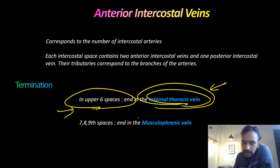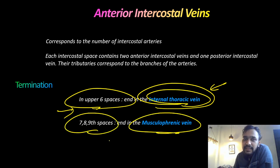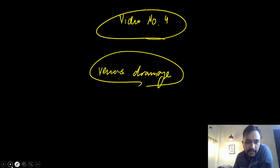For spaces 7, 8, and 9, the anterior intercostal veins are draining into the musculophrenic vein.